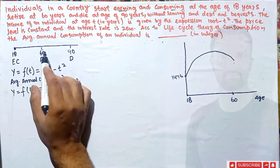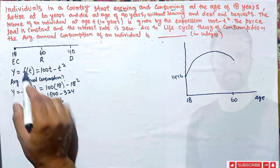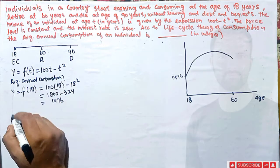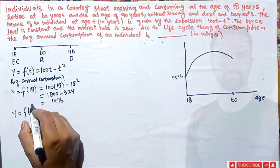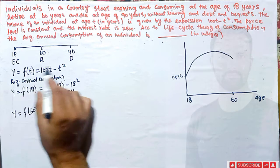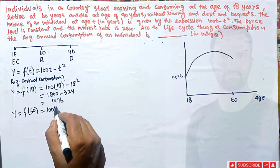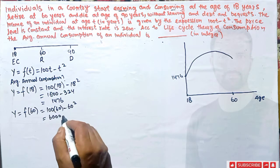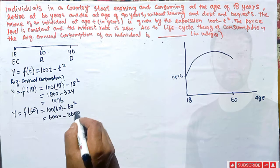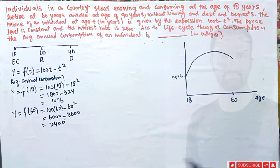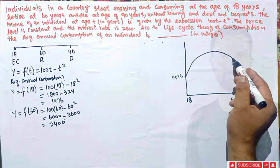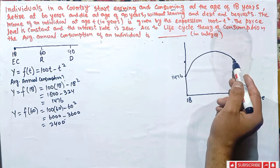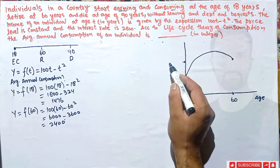When the individual's age is 60, we plug t = 60 into the income expression: 100×60 minus 60² = 6000 minus 3600 = 2400. So when the individual's age is 60, his income is 2400 at that point on the curve.